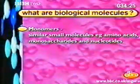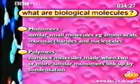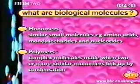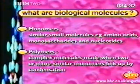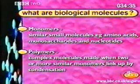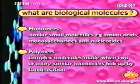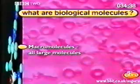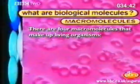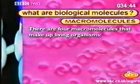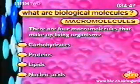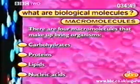Larger complex molecules called polymers are formed when two or more similar monomers link up by condensation. But not all large molecules are made by the linking of identical small units. In these cases, we use the more general term, macromolecules. There are four types of macromolecules that make up living organisms: carbohydrates, proteins, lipids and nucleic acids.